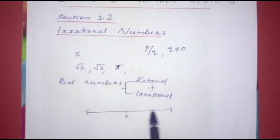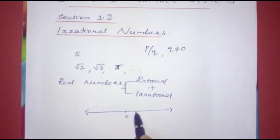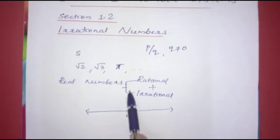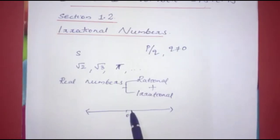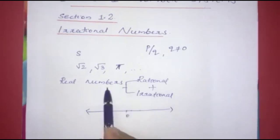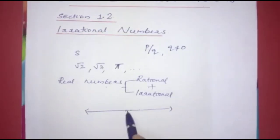Now, if you want to write a number line with a rational number, you want to write all the real numbers on this number line. That is why we put a real line on this number line. If you want to write a rational number, then you write a real number on this number line.